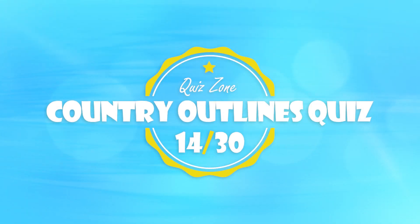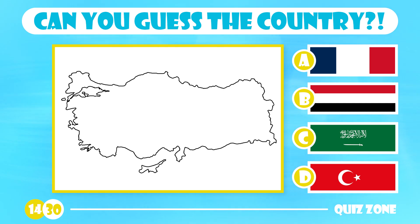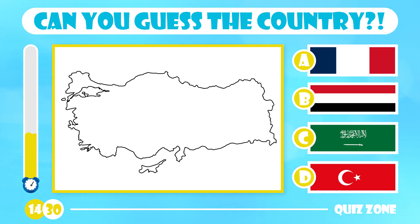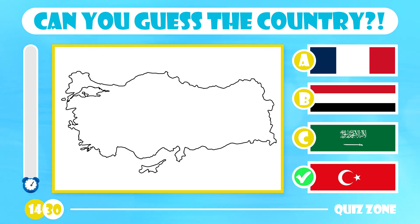Still easy for geography lovers. Guess this one. France, Yemen, Saudi Arabia or Turkey? Turkey is a diverse nation between Asia and Europe that borders eight countries. This area is part of the cradle of civilization which humans have inhabited for the most extended period of any region on earth.